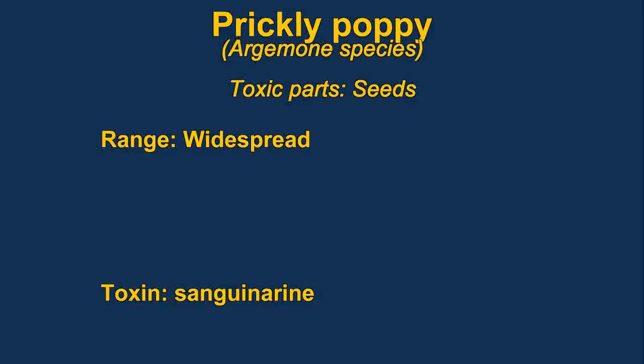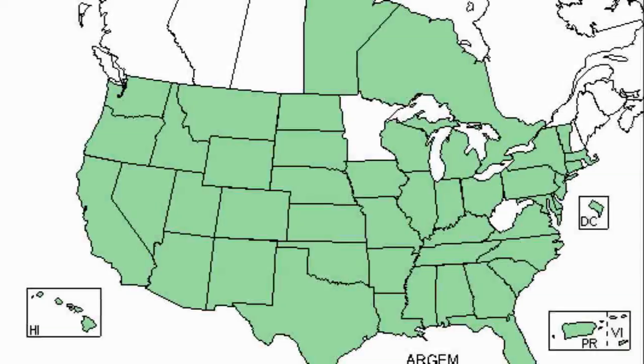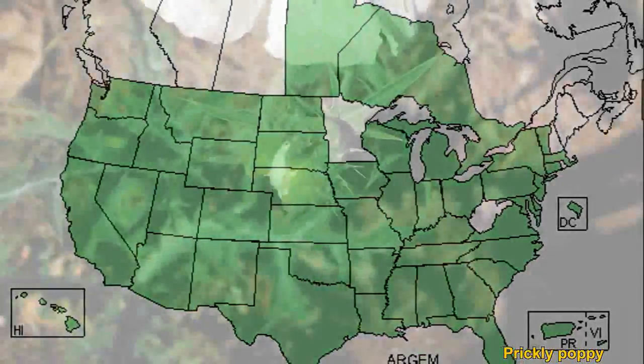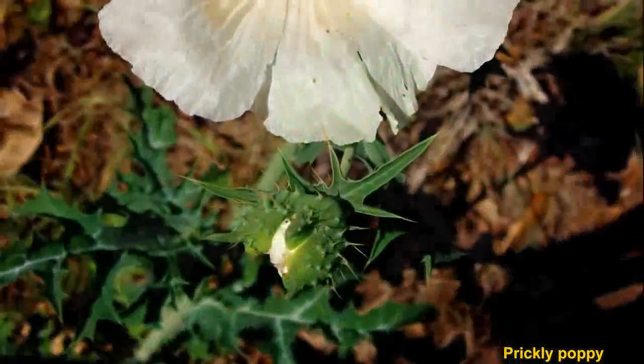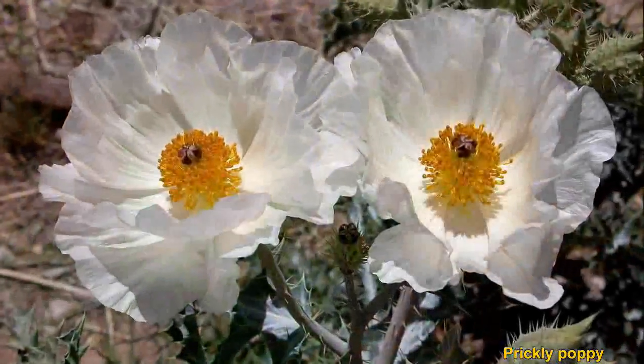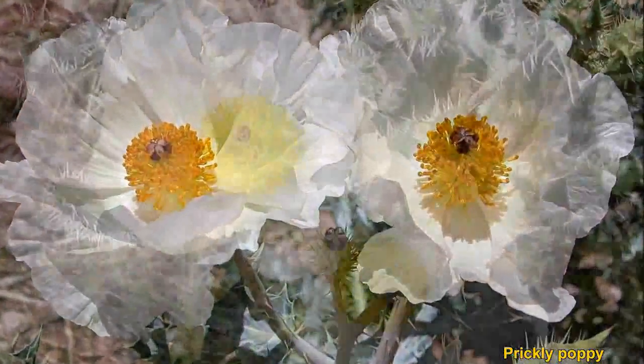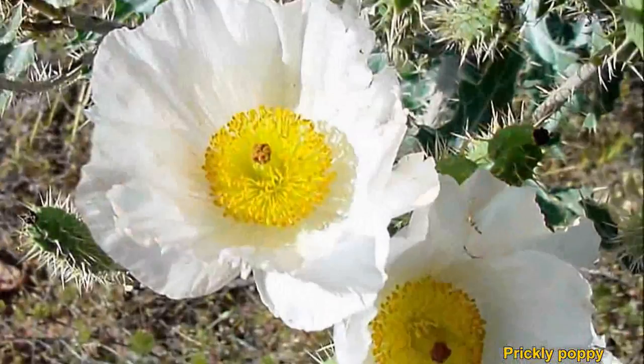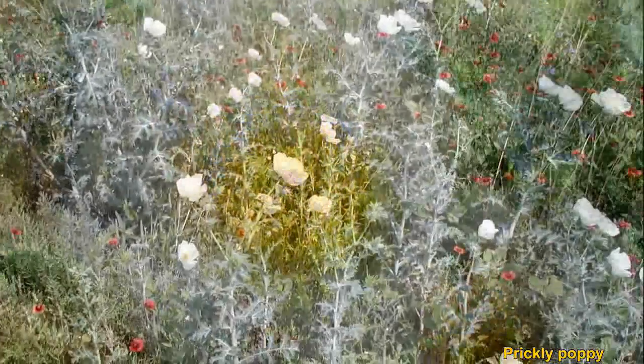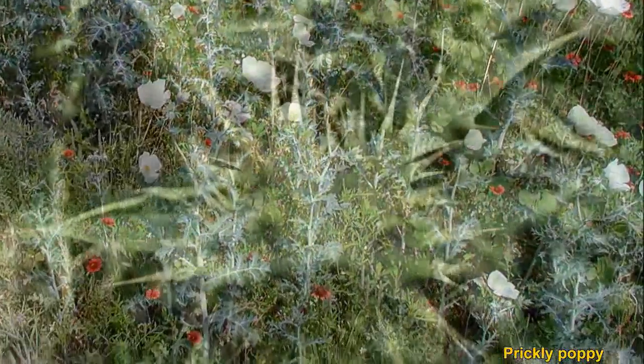Prickly poppy are widespread in North America. The seeds contain a pale yellow latex substance. The oil from the seeds resembles mustard, and it has been used to contaminate and poison mustard.